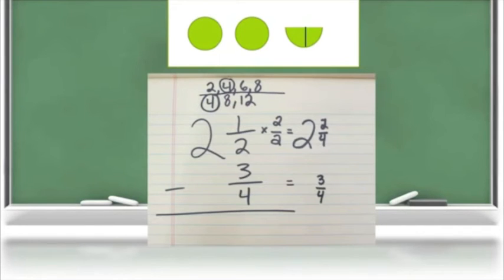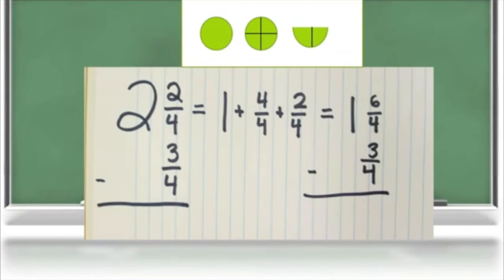By renaming the half as our least common denominator of fourths, the student should next see that they can take away fourths, but there aren't enough to remove three-fourths. So as they did in the model, they can rename one of the wholes as four-fourths, which would combine with the two-fourths and give you a total of six-fourths.